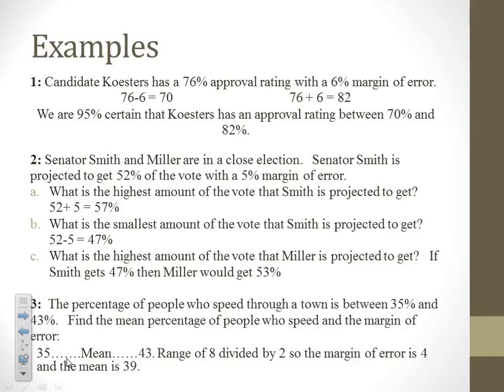Here's a different way this question can be asked. The percentage of people who speed through a town is between 35% and 43% — find the mean and margin of error. Our range spans from 35 to 43, a range of 8, so we divide by 2 to get a margin of error of 4. Our mean is 39, which is directly in between 35 and 43.